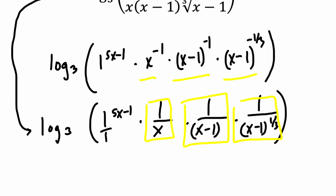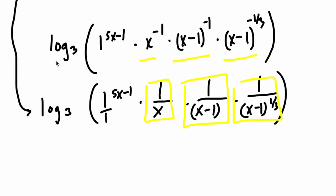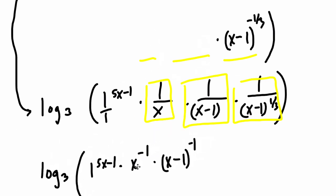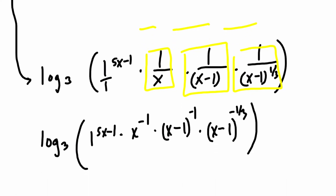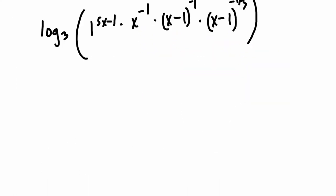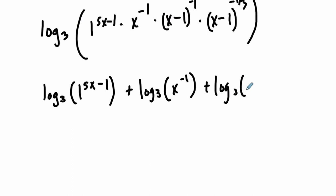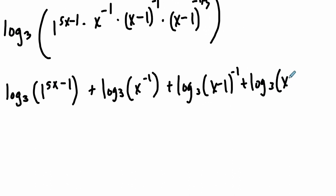So now that I've messed this whole thing up in terms of making it sloppy, sorry about that, let me just move some things around. Okay, so we're at this step. Now once you're at this step, we can basically use the laws of logarithms to break this down. My law of logarithms basically says if I have the log of the product of a bunch of factors, it equals the log of the sum of those factors. So log base 3 of 1 to the power of 5x minus 1, the sum of each log. So log base 3 of x to the negative 1 plus the log base 3 of x minus 1 to the negative 1st, plus the log base 3 of x minus 1 to the negative 1 third. So I just applied a law of logarithms.